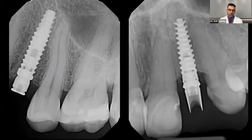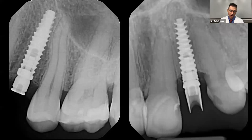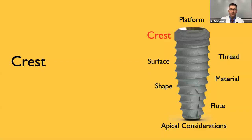On a radiograph you can tell whether an implant has one or two thread leads. The implant on the right shows a cross pattern in the center — that's a dual-thread implant. The one on the left, a single-thread, does not have that cross. We want the single-thread design on the left, not the dual-thread on the right.